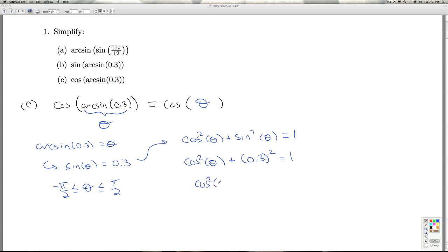And I get cosine squared theta is, oops, excuse me, plus, what's 0.3 squared? Well, that's 3 tenths squared. That's going to be 9 over 100. So, that's 0.09. Which means cosine squared theta is 1 minus 0.09, which is 0.91.